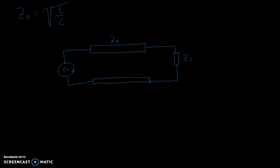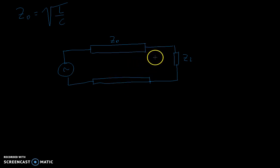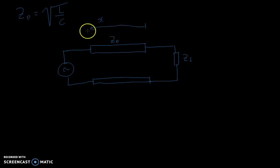So now we're going to add a coordinate system into this line. Let's say that this is the coordinate X — this is X, this is the positive side of X, and this is X equals zero.